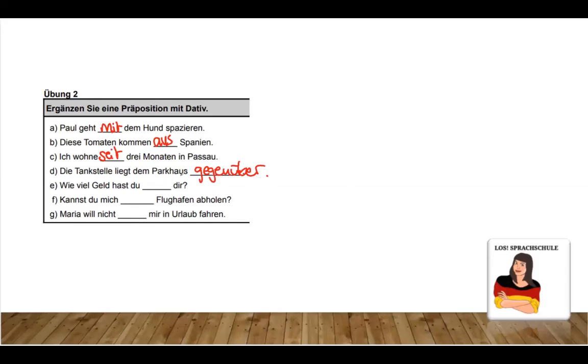Here it is easy to see because, we saw it before, it's the only one where it is after the object and not before. Wie viel Geld hast du bei dir? How much money do you carry or do you have with you? Kannst du mich vom, so it's the same as von dem, Flughafen abholen? Can you pick me up from the airport? Maria will nicht mit mir in Urlaub fahren. Maria doesn't want to go to vacations or to go have vacations with me, mit mir.